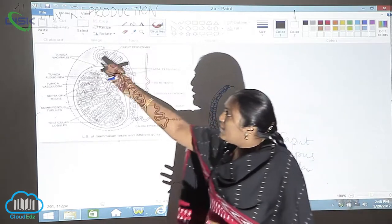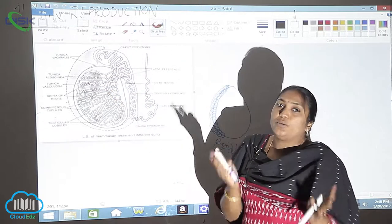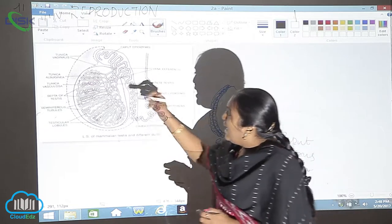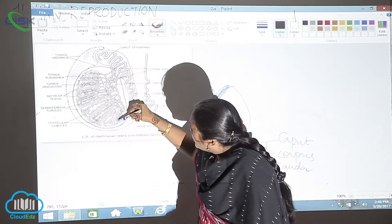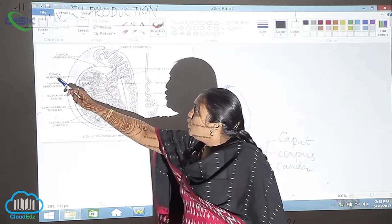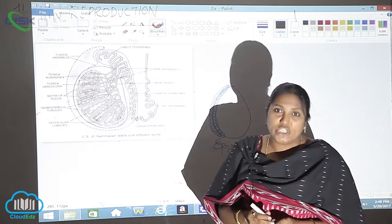When you talk about tunica vaginalis, it is the outermost part of the testes. And you can see the inner one which is very white in color, this is called tunica albigenia.